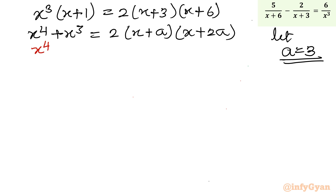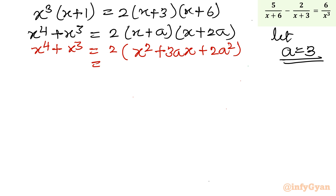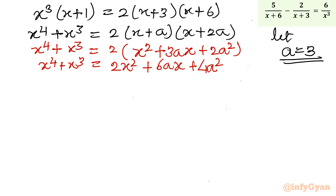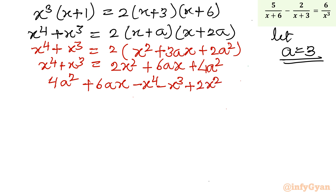Let us expand first: x⁴ + x³ equal to 2 times (x+a)(x+2a), which expands to 2x² + 6ax + 4a². Taking all terms to the right hand side and framing as a quadratic in a: 4a² + 6ax minus x⁴ minus x³ + 2x² equal to 0. This equation is quadratic in a.